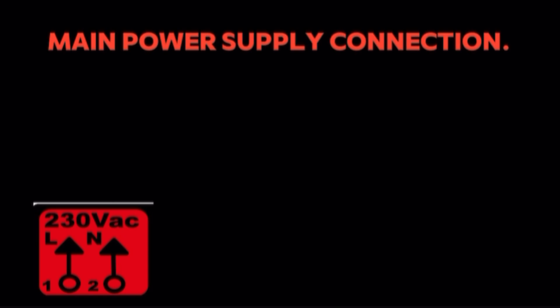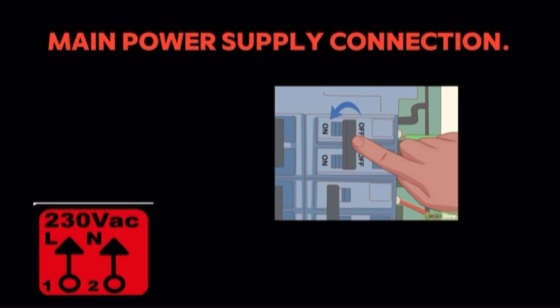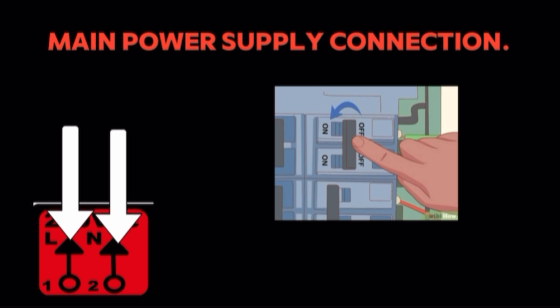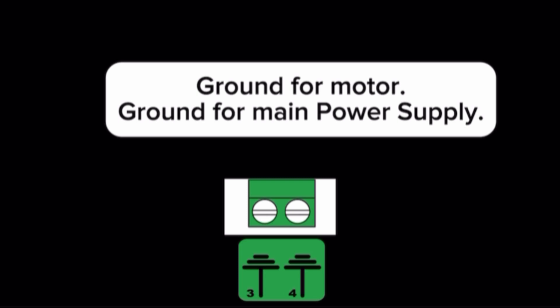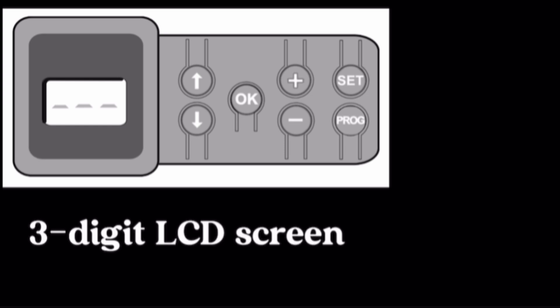Terminal 1, terminal 2. Main power supply connection is main power supply to power up control board. Terminal 1 is line power supply. Terminal 2 is neutral power supply.